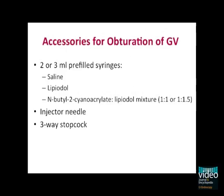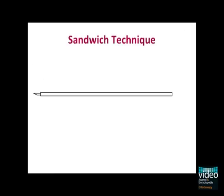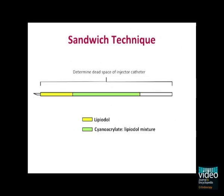One technique used for obliteration of gastric varices employs the so-called sandwich technique. First, the dead space of the injector catheter is determined, usually between 1.5 and 2 milliliters, and then the injector catheter is filled with lipiodol, followed by a mixture of cyanoacrylate and lipiodol at a 1-to-1 or 1-to-1.5 ratio, followed by a volume of lipiodol. Following penetration of the varices, the injector volume is emptied into the varices, the needle is withdrawn, and then a saline flush is used to empty out the injector catheter. This step can be repeated for every injection as needed.